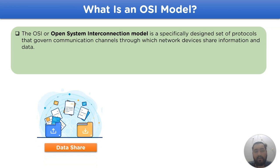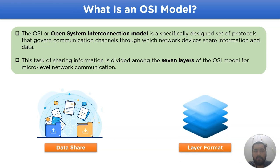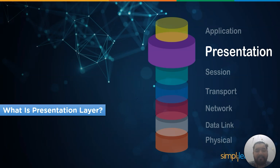The OSI, or Open System Interconnection model, is a specifically designed set of protocols that govern communication channels through which network devices share information and data. This task of sharing information is divided among the seven layers of the OSI model, which works at the micro level of network communication. Now let's look into the next topic: what is the presentation layer.